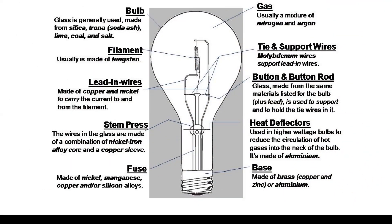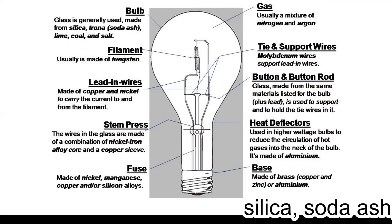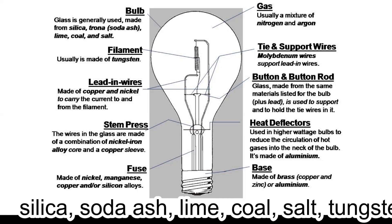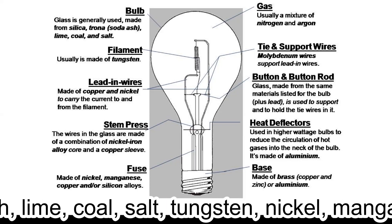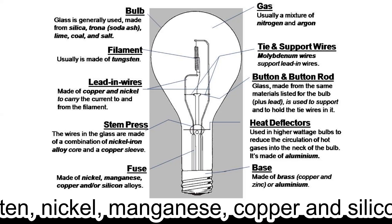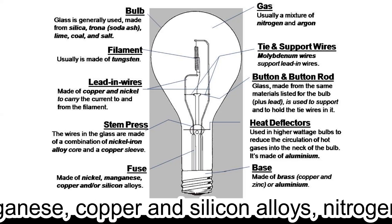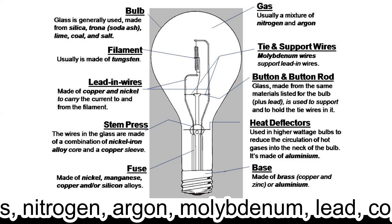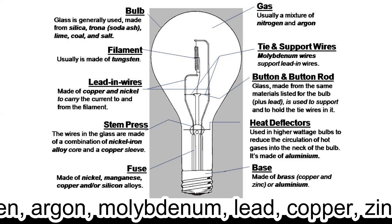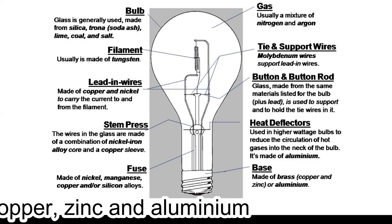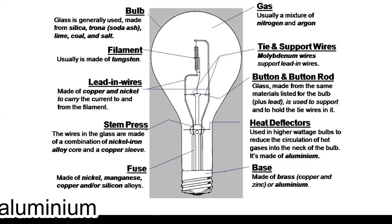About 17 minerals and elements such as silica, soda ash, lime, coal, salt, tungsten, nickel, manganese, copper and silicon alloys, nitrogen, argon, molybdenum, lead, copper, zinc and aluminium are required in the manufacture of a bulb.